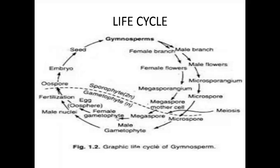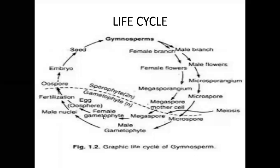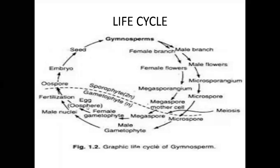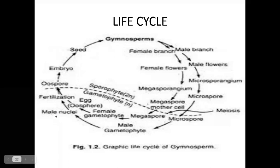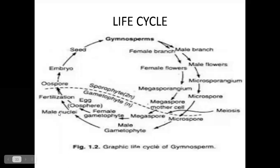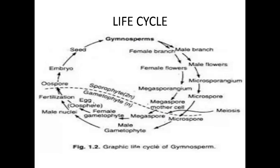Megaspores develop into the female gametophyte. The female gametophyte contains egg cells, Oospheres, or Archegonia. Microspores develop into the male gametophyte. The male gametophyte contains male gametes or male nuclei, which are fertilized to form the diploid zygote. This is the complete life cycle of gymnosperms.